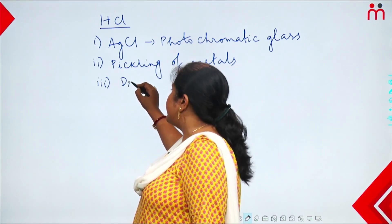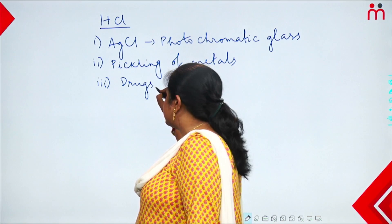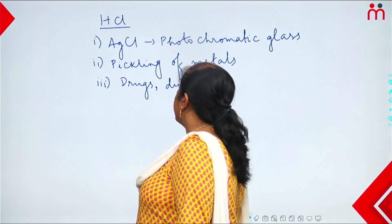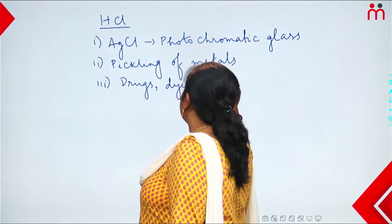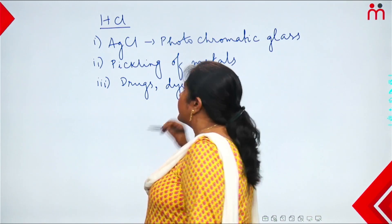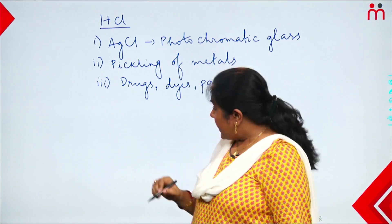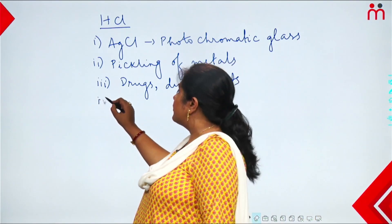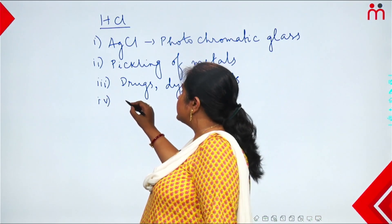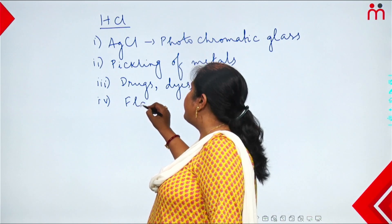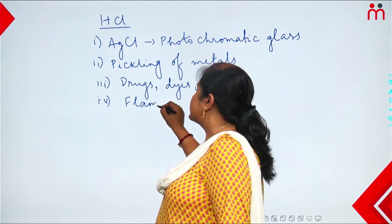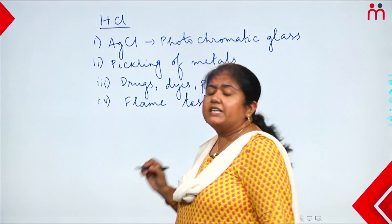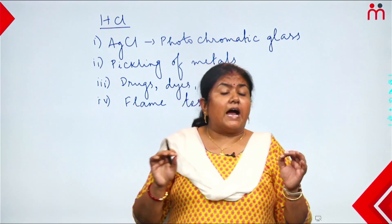Another use of hydrochloric acid: it is used in manufacturing medicines and drugs — for storing drugs, for pain relief medications. A very important use of hydrochloric acid is in the flame test. In the flame test, we identify which metal is present in a salt.